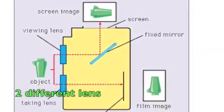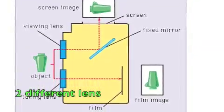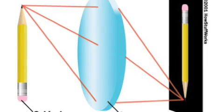Then there is the twin lens camera, that uses two different lens, one for the eye and one for taking the picture. The lens is a very simple curved glass.